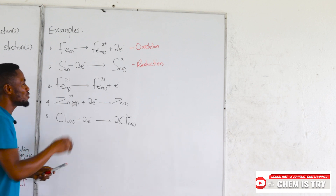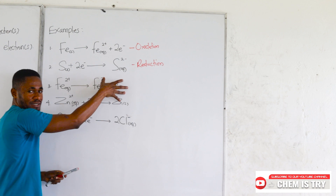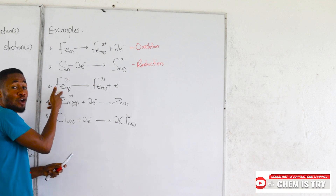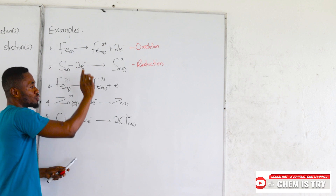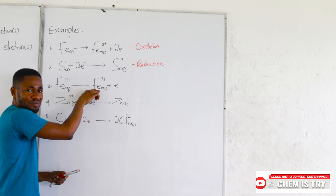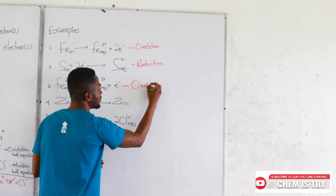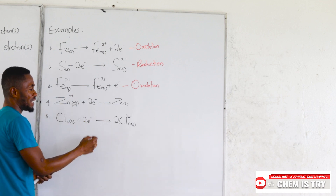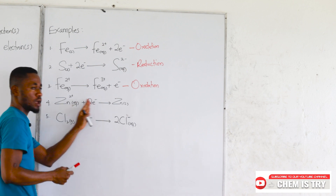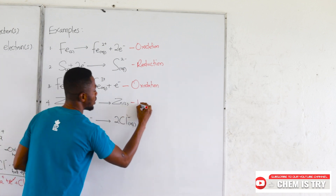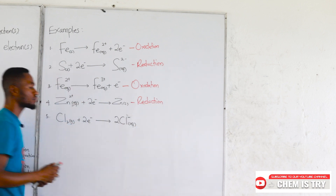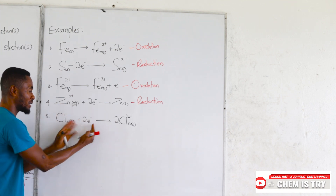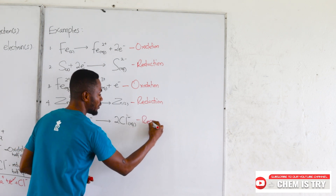For the third example, the electron is with the cation on the product side, so this becomes an oxidation half equation. For question four, we have the electrons and the species at the reactant side, so that is the reduction half equation. For the last one, we also have both the species and the electrons at the reactant side, so that one is also a reduction half equation.